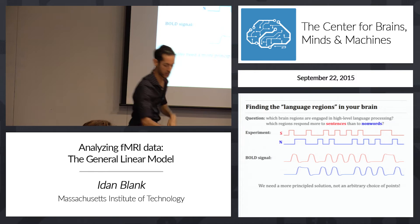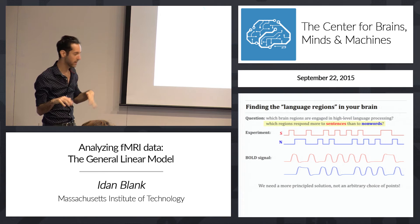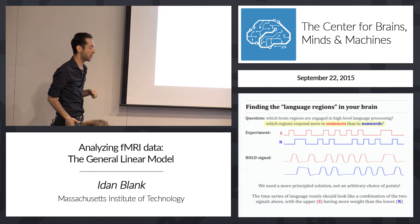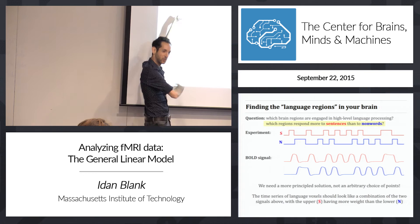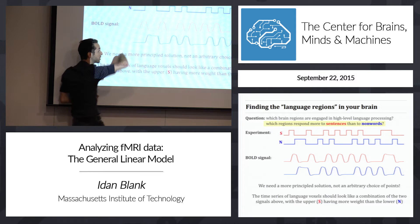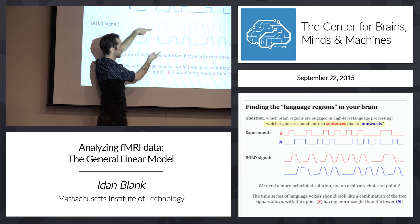We need a more principled solution — not just arbitrarily choosing which points to average. Our question is: which regions respond more to sentences than to non-words? The time series of voxels within the language system should look like a combination of the sentence-prediction and non-word-prediction, where the sentence response is stretched vertically (larger increases) and the non-word response is shrunk vertically (smaller increases). If we stretch one and shrink the other and combine them, the signal in the language system should look something like that.